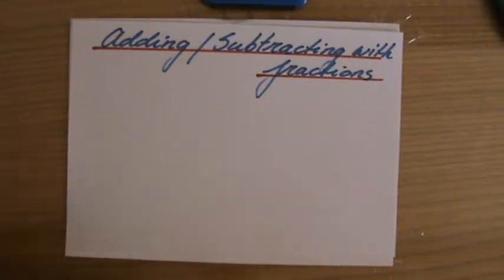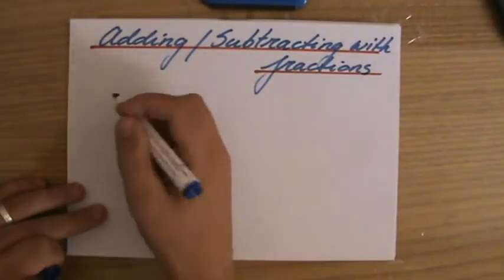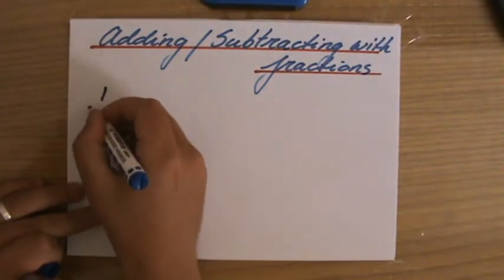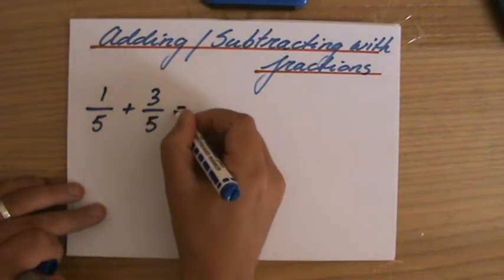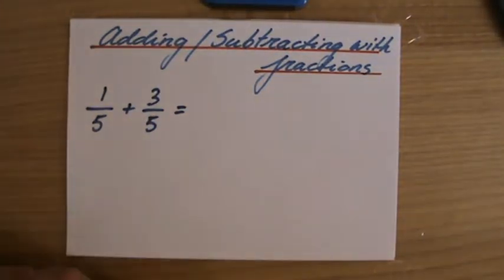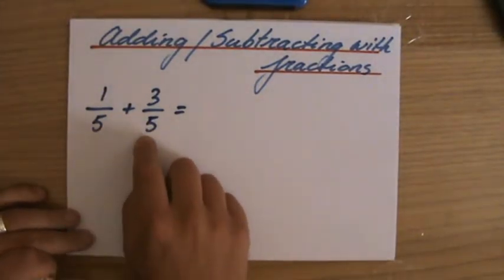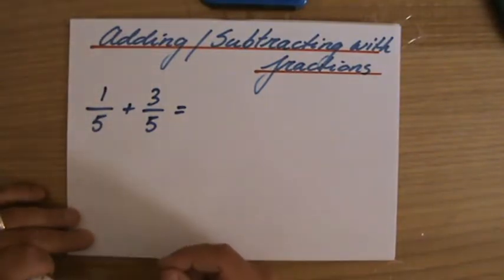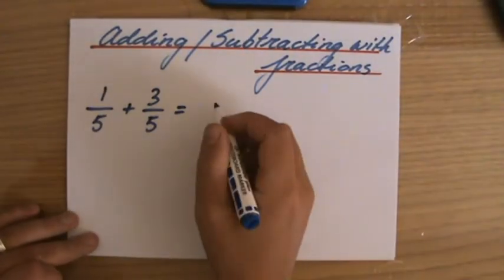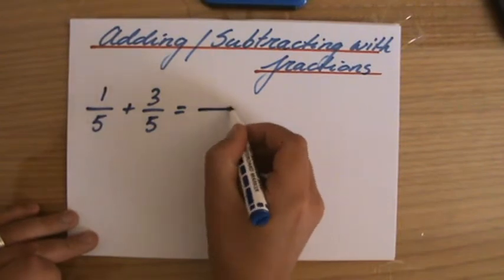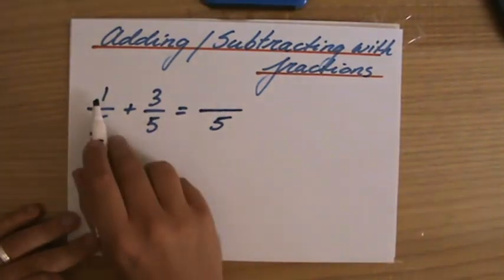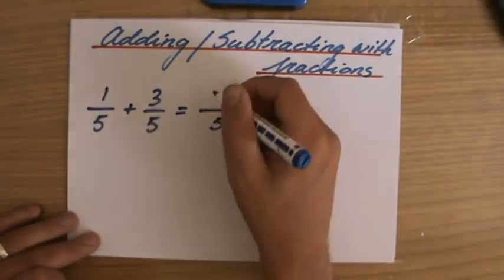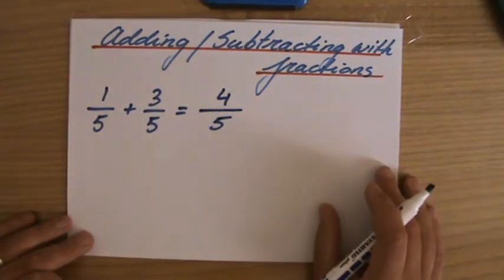More adding and subtracting with fractions. So, for instance, let's look at 1 over 5 plus 3 over 5 equals... Whenever I'm adding or subtracting with fractions, what has to be the same? The denominator, the bottom, has to be the same. Because then only then I can compare my slices of pizza, as I've shown you in the previous video. Now, in this case, they are the same. Well, that's fantastic. So, the 5 stays a 5, and how many fifths do I have? Well, I have 1 fifth and 3 fifths, so I have 4 fifths, 4 over 5.